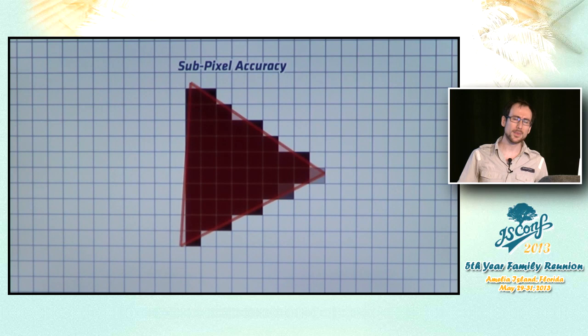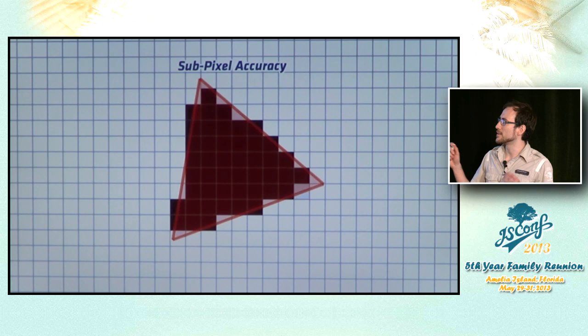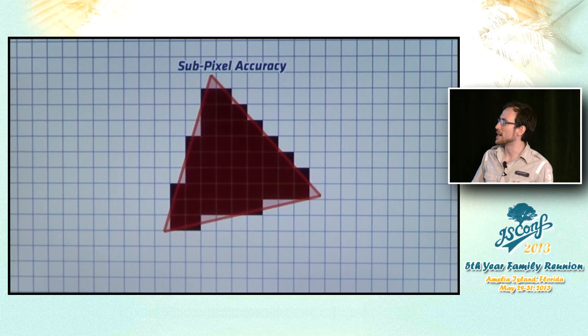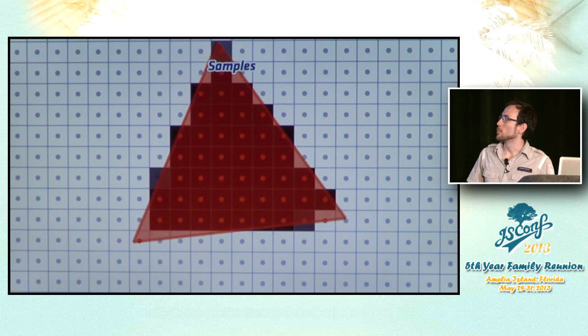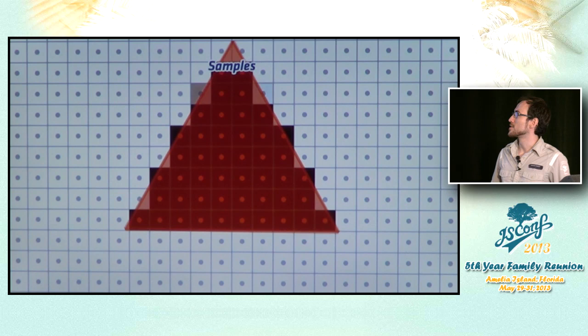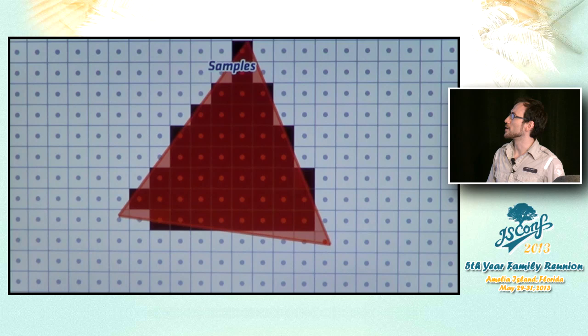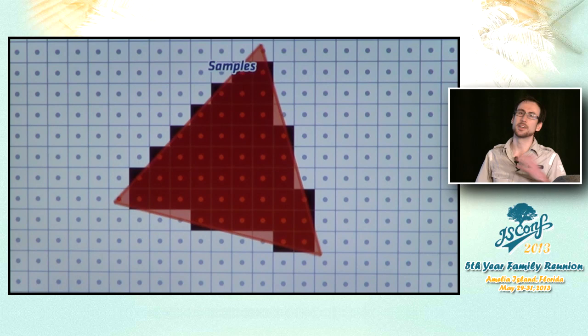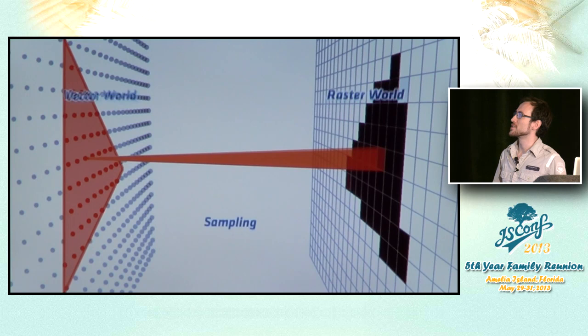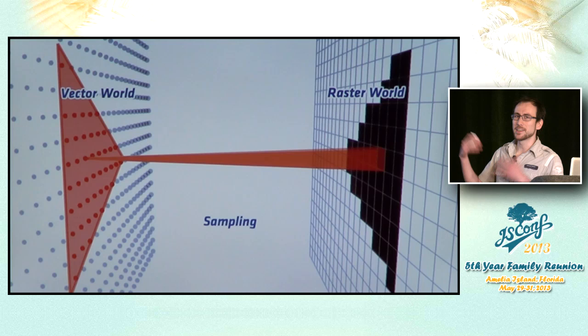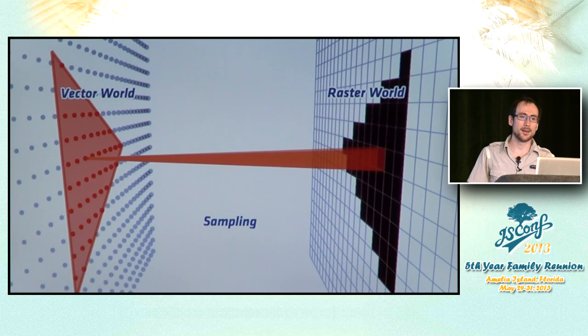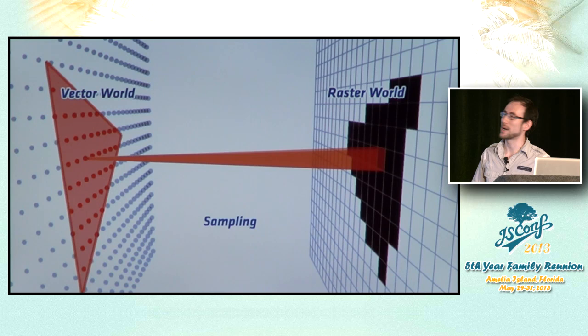How exactly does this work? The key is something called sampling, where whether a pixel is black or white is defined by just one thing: the point right in the middle. If that point is inside the triangle, we color the pixel black; otherwise white. This defines two worlds: on the left the world of vectors, where everything is mathematical and beautiful, and you use sampling to transfer it to the world of pixels on the right — the raster world.